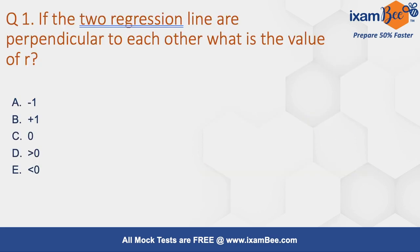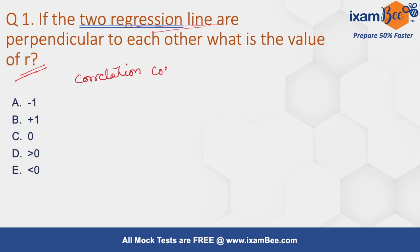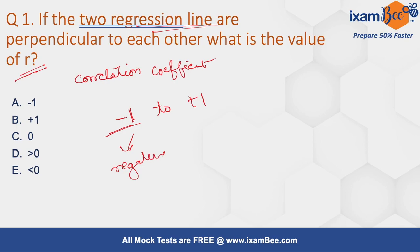Let's see question number one: if the two regression lines are perpendicular to each other, what is the value for r? r is the correlation coefficient — it shows the relationship between the two regression lines. The value of r ranges from minus one to plus one. If r is minus one it indicates a perfectly negative relationship, and if it is plus one it indicates a positive relationship. If the value for r is zero, it indicates that there is no relationship between the two regression lines.